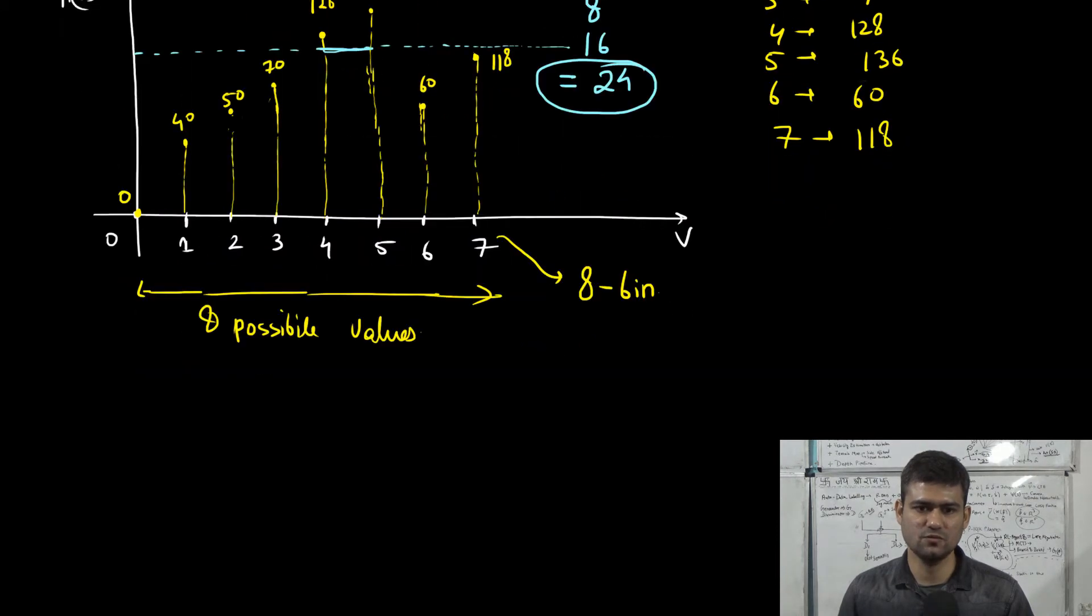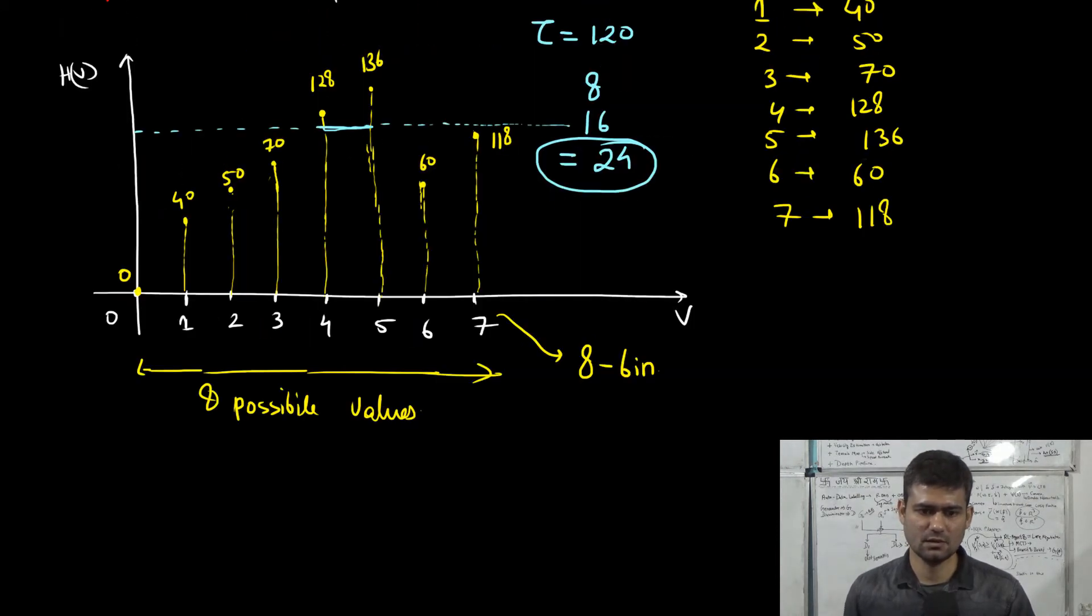The new values would be, for bin 4, we will have the new value 120, for bin 5, again we will have 120.